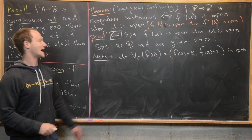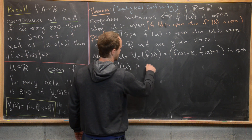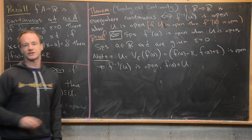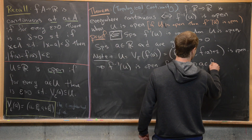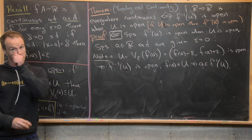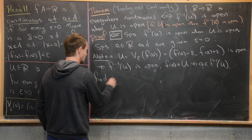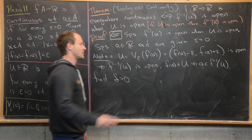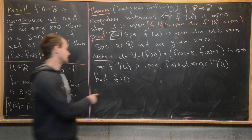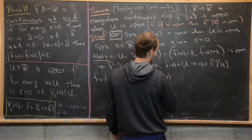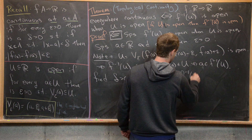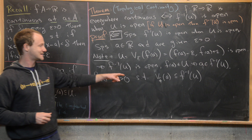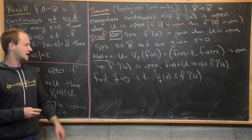By our hypothesis, f inverse of U is open. We also note the simple fact that f(a) is in U by the definition of U, which tells us that a is in f inverse of U — an open set. So we can find a delta corresponding to the openness of f inverse of U at the point a, such that the delta neighborhood centered at a is totally contained in f inverse of U.